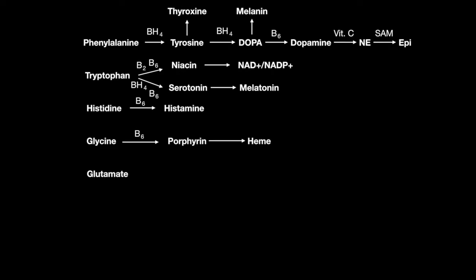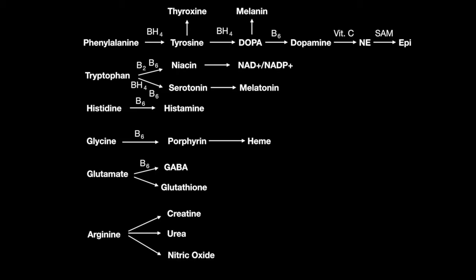Glutamate can become GABA, with B6, or glutathione. And finally, arginine can become creatine, urea, or nitric oxide, with BH4.